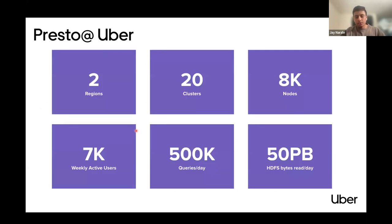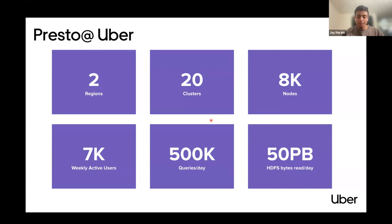At Uber, we use Presto a lot. We have around 20 static clusters across two regions and read around 50 petabytes of HDFS data per day. We are actively increasing our Presto usage, incorporating new avenues like Presto on Spark for long-running batch queries. Presto is very crucial for Uber analytics — we have around 7,000 to 10,000 weekly active users. We're very excited to contribute more to open source in the coming years.